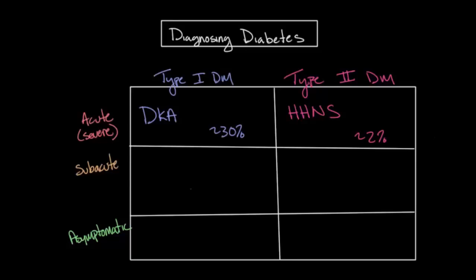The difference between DKA and HHNS has to do with the difference between the underlying mechanisms of type 1 diabetes and type 2 diabetes. The most important difference is that in DKA, the individual will become acidotic due to the production of ketoacids, hence the name diabetic ketoacidosis, as opposed to hyperosmolar non-ketotic state where ketoacids are not produced.